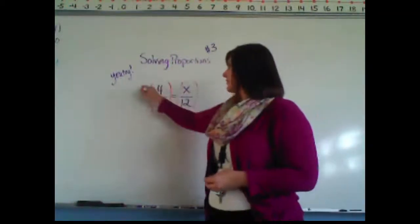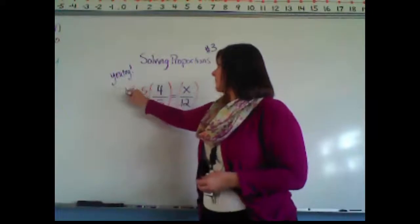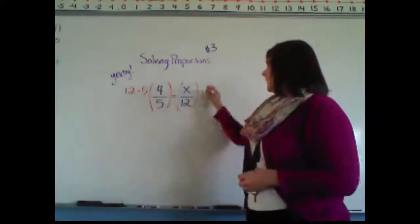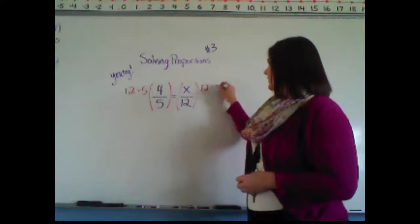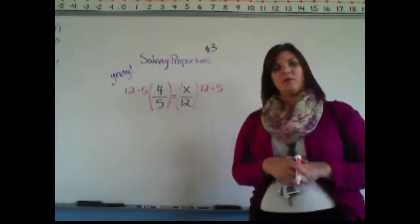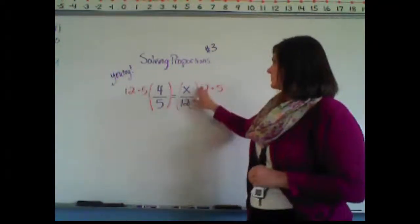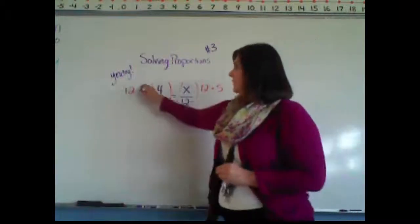I like to write it like this: 5 times 12 here on the left side and 12 times 5 on the right side. We're all using multiplication here. This is being multiplied by everything. So let's go ahead and simplify.